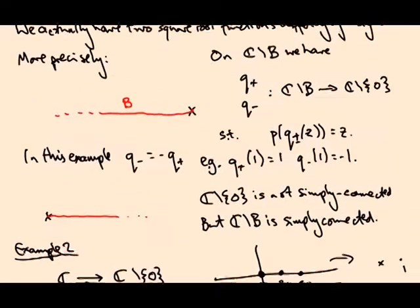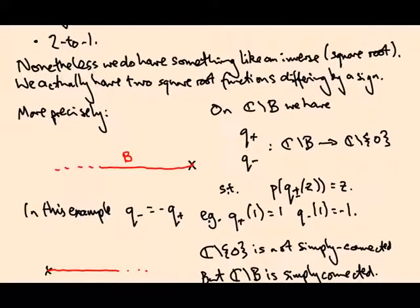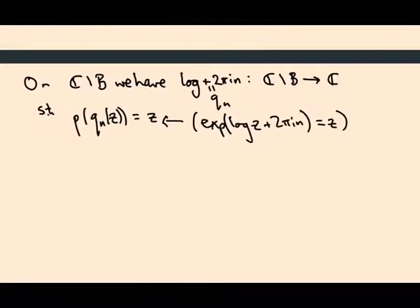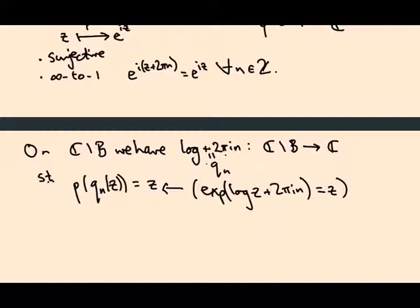This is very similar to the case of the square and square roots. In that case it was a two-to-one map, so we have two preimages defined on complements of a branch cut. Here we've got infinitely many inverses defined on complements of a branch cut, and they all satisfy this equation which says exp of log is the identity.